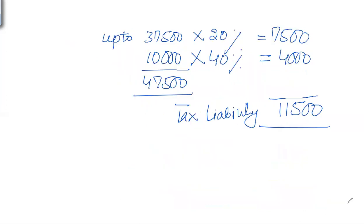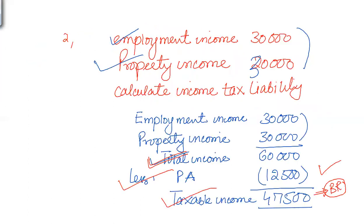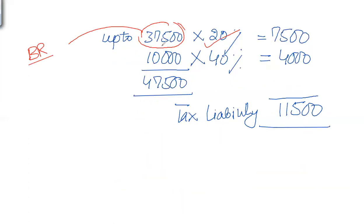Now let's apply the rates. Up to the basic rate band of £37,500, the rate is 20% on non-saving income, giving £7,500. The difference between £47,500 and £37,500 falls in the higher rate tax band, where the rate is 40%, so the liability becomes £11,500. Up to the basic rate the rate is 20%, and on additional income the rate is 40%.